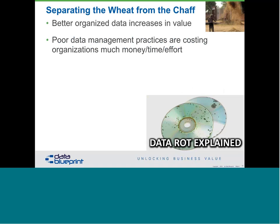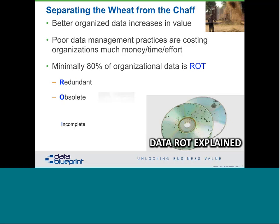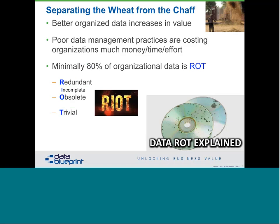Better organized data is generally a good thing for organizations, but we don't yet have generally accepted data management practices in place the way the accounting profession does. There's something worse about data as well: minimally in your organizations, 80% of the data that's there is ROT — an acronym that stands for data that is redundant, obsolete, or trivial. My wife corrected me: it's actually RIOT — redundant, incomplete, obsolete, or trivial. The only argument I get over this figure is that the number is much higher than 80%.